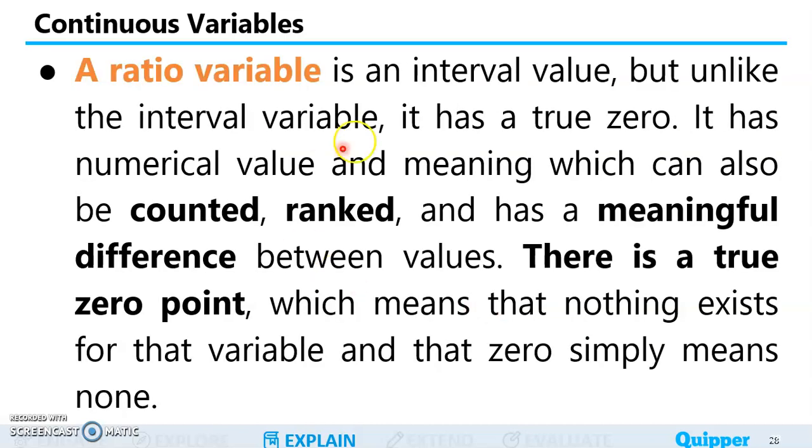Another continuous variable is the ratio variable. It is an interval value, but unlike the interval variable, it has a true zero. It has a numerical value and meaning which can also be counted, ranked, and has a meaningful difference between values. This has categories, it can be counted as frequencies, it can be ranked, and the difference between the values is meaningful. And unlike the interval variable, what makes it different is that there is a true zero point in ratio variable, which means that nothing exists for that variable and that zero simply means none.